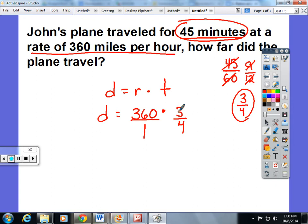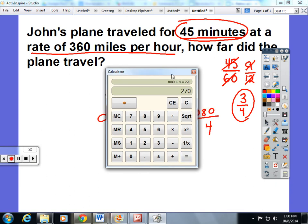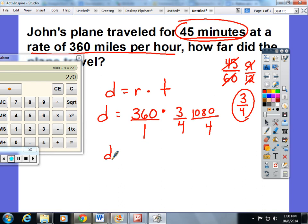Top times top is 1080. Bottom times bottom is 4. So students can do 1080 divided by 4. And they're going to get the distance traveled to be 270 miles.